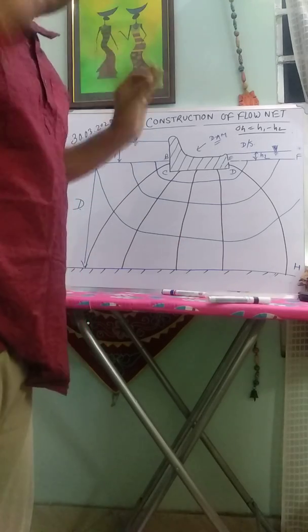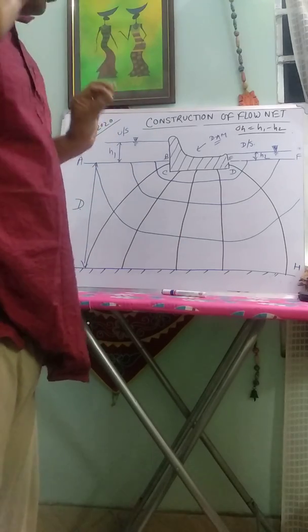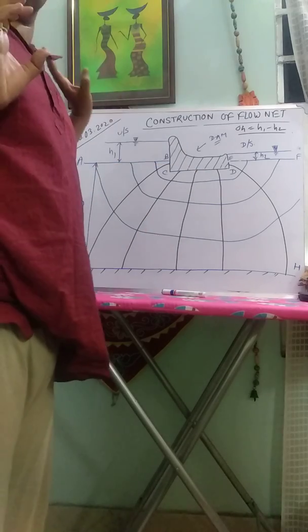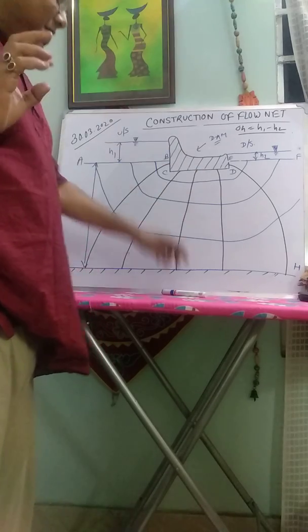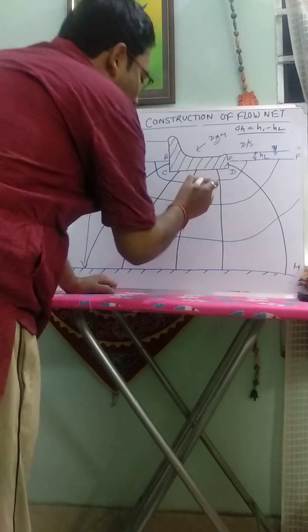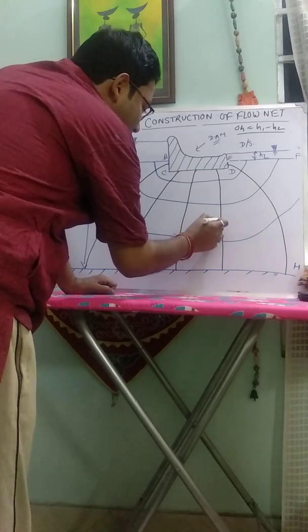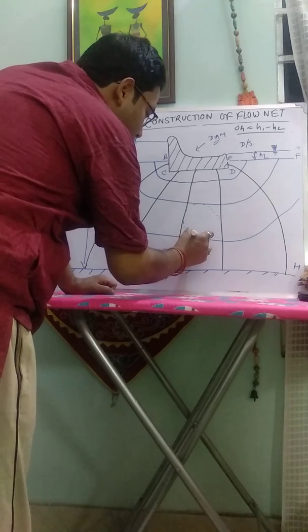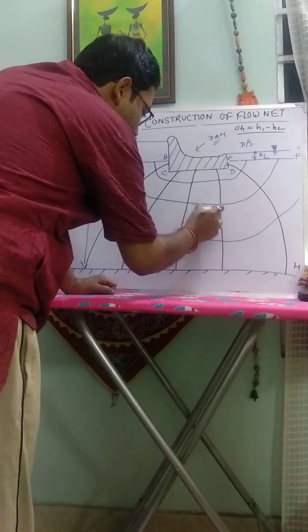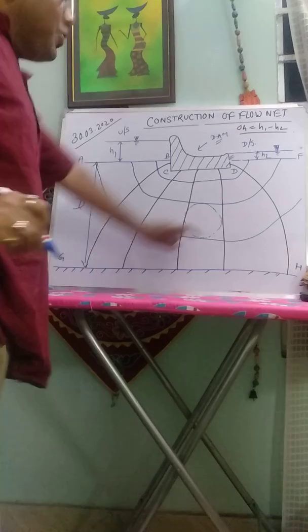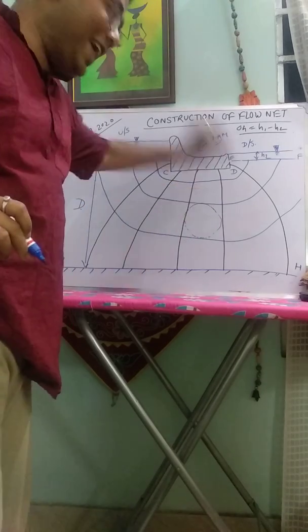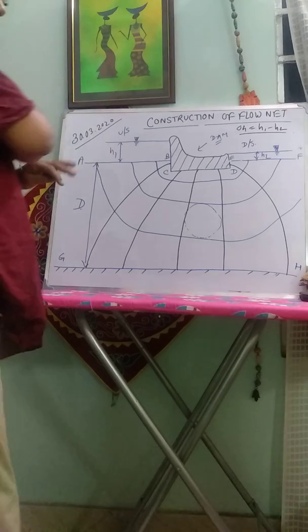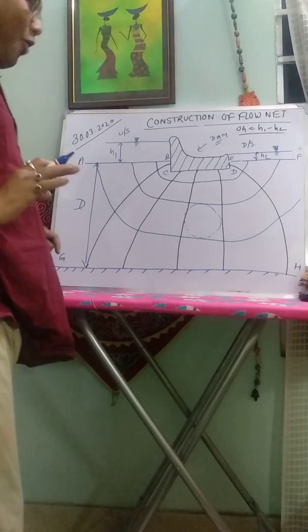Now, when we construct a flow net, we try to draw or tend to form squares. Means, if we draw a circle, it will touch the four sides of the box. Our construction is over.